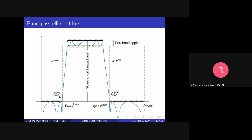If you want to modify FS1, the only option is to increase FS1 — this makes the transition band narrower. If you want to modify FS2, you should decrease FS2 — decreasing FS2 also makes the transition band narrower. You should not decrease FS1 or increase FS2, as that would widen the transition band. So you can increase FS1, or you can decrease FS2, but not the reverse.